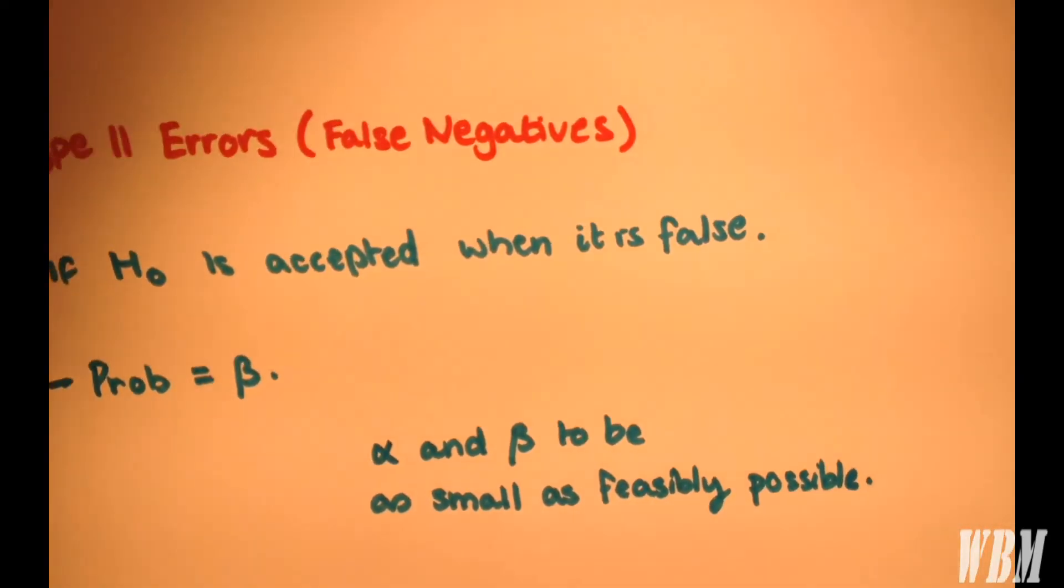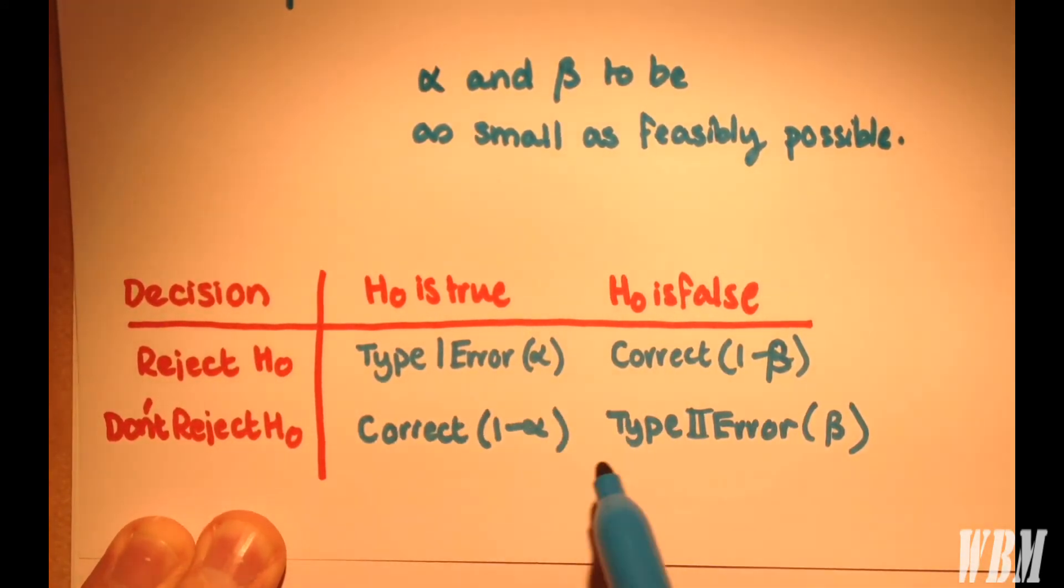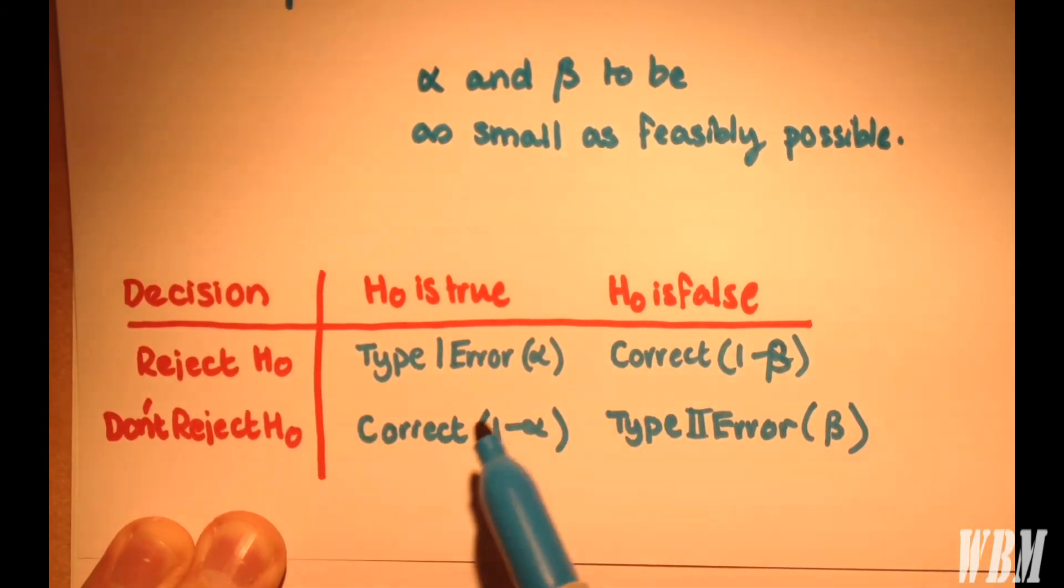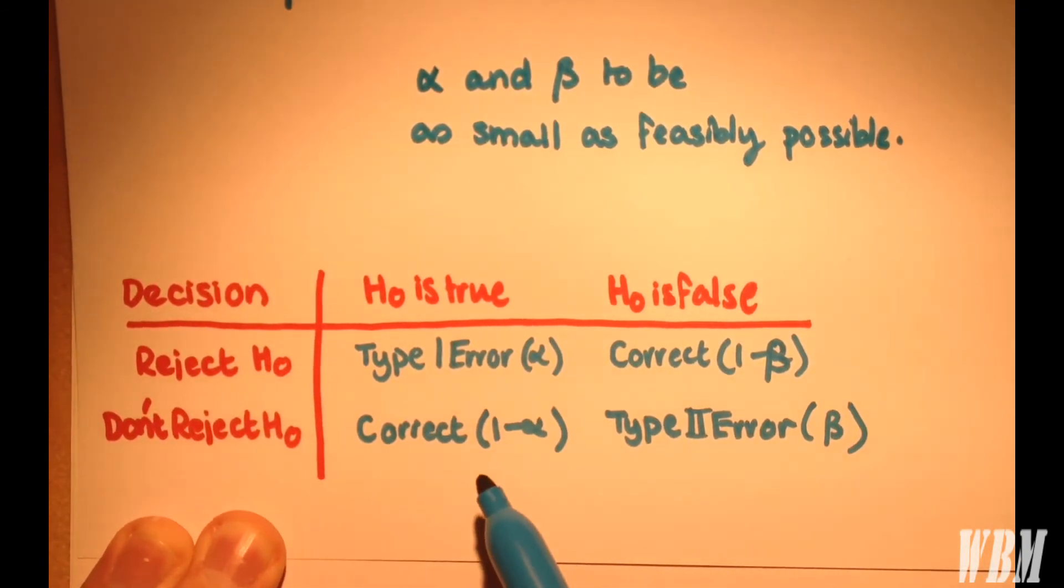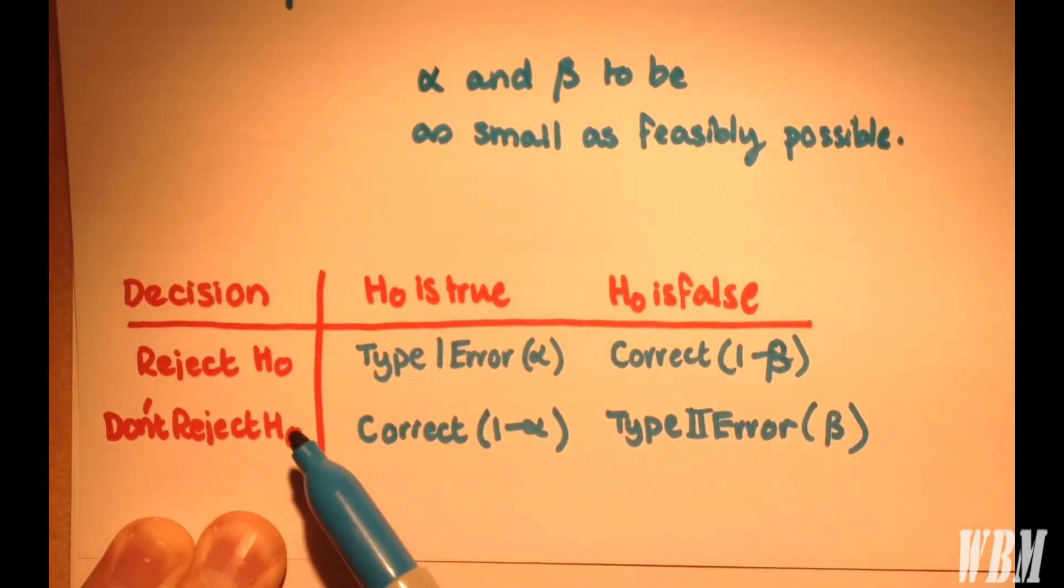Now, at the bottom I include a table here as a brief overview of the decisions we make and the type of errors we get. If the null hypothesis is true and we don't reject the null hypothesis, this is correct. The probability of that is 1 minus alpha.